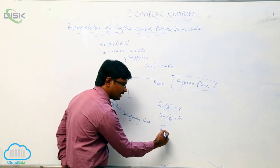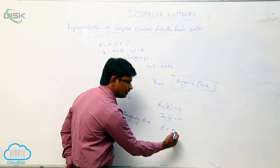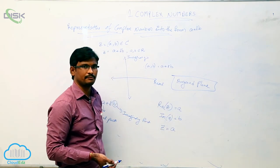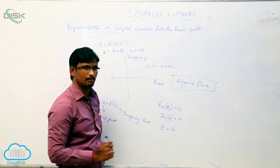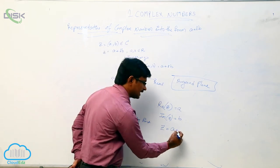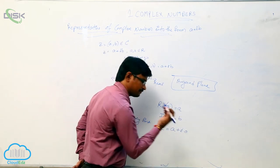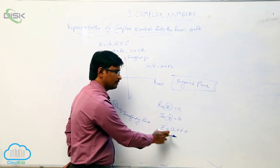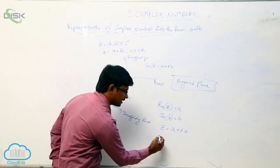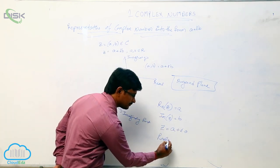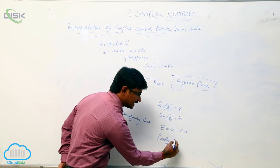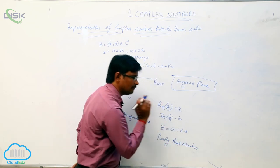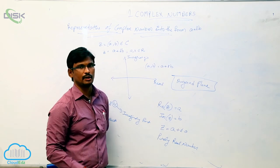Suppose a complex number z has only a real part a and no imaginary part — we can write it as a plus i times 0. Here we have only the real part, so this is called a purely real number.